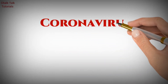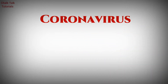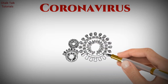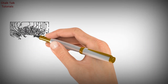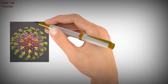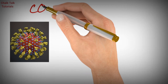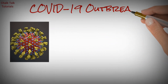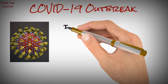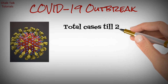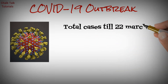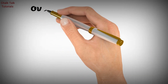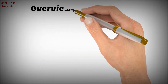Hello everyone, welcome to Chalk Talk Tutorials. In this video I'm going to tell you about how coronavirus operates in the human body. Before moving ahead, we must know some important things: COVID-19 is a new strain of coronavirus, and till 22nd March it caused infection in approximately three lakh people and a death toll of 13,000 people.